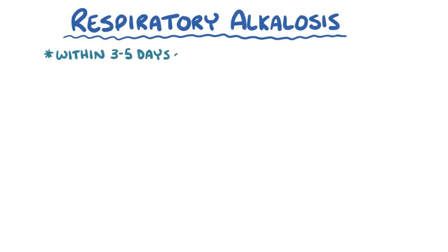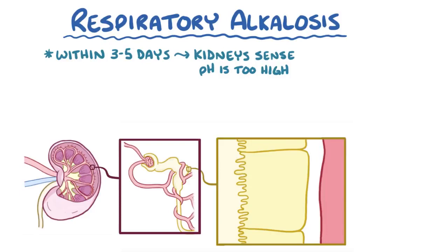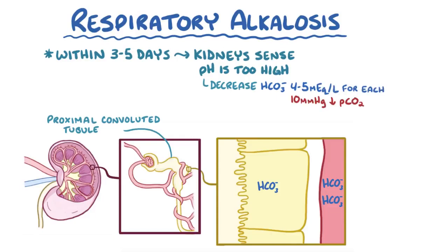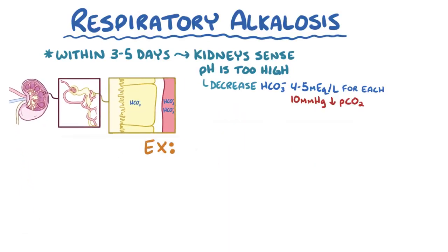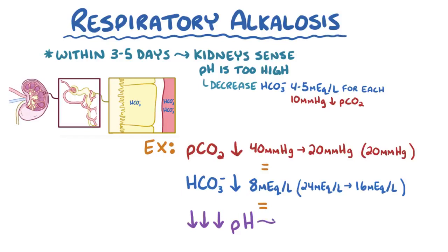Fortunately, within about 3 to 5 days, the kidneys start sensing that pH is too high and step up to help correct the imbalance. The major way they do this is by making the cells of the proximal convoluted tubule excrete more bicarbonate. The kidneys are quite effective, managing to decrease bicarbonate concentration about 4 to 5 mEq/L for each 10 mmHg decrease in pCO2. So if pCO2 went down from 40 to 20 mmHg, plasma bicarbonate would decrease by 8 mEq/L, from 24 to 16, which can lead to a substantial decrease in pH, bringing it closer to its normal range again.